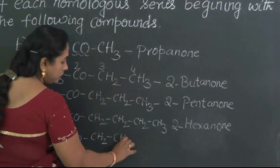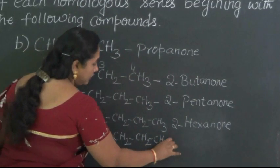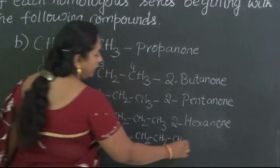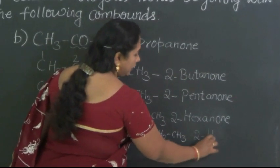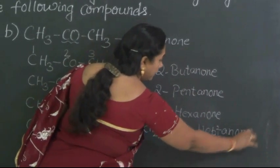CH2-CH2-CH2-CH3. One more CH2 in this place and then CH3. The name of this compound would be 2-heptanone.